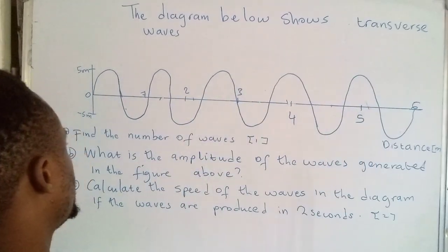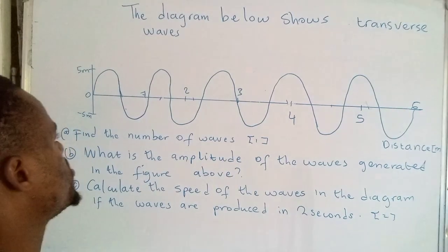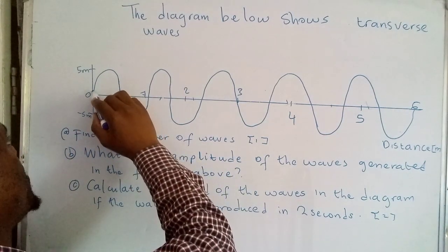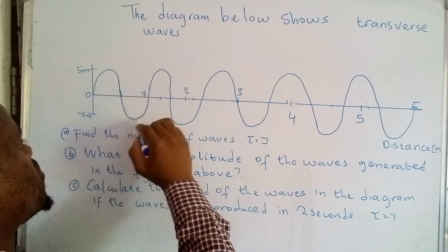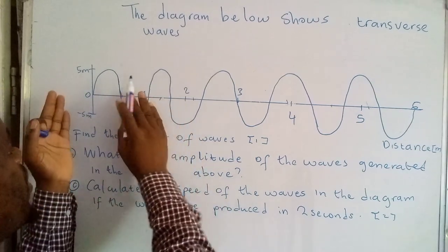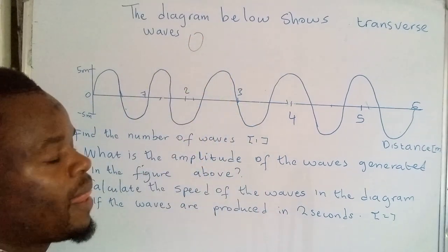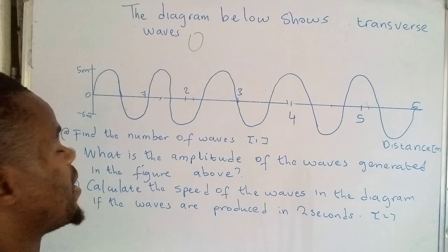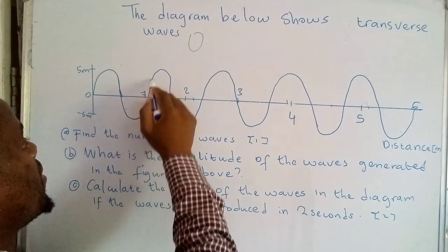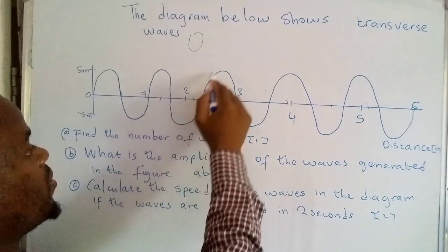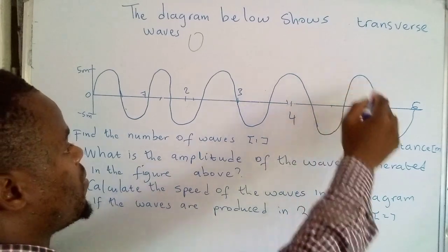So those are the waves. Find the number of waves. Now what you need to know is this one here is half of the wave and that one is half of it. So when we overlap those, we're going to have one wave. So now that's how we will be counting. From here: one, two, three, four, five.